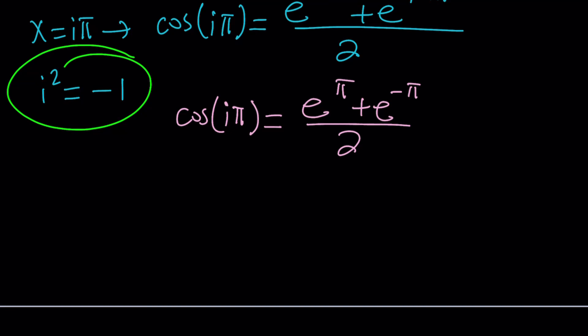You take the cosine of an imaginary number, and guess what? You do get a real answer, all right? So let's go ahead and see what that value looks like from Wolfram Alpha's perspective.